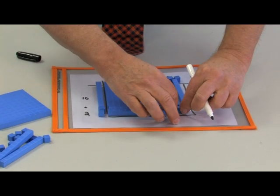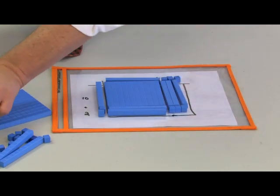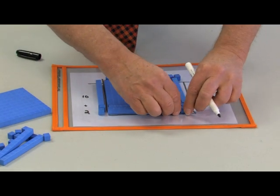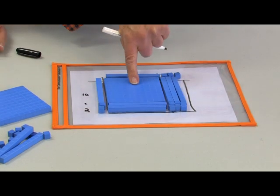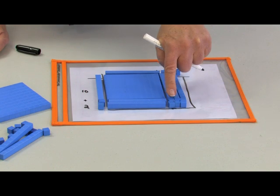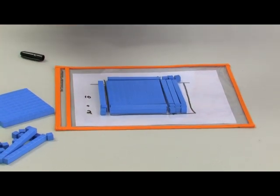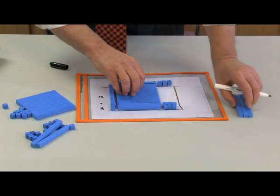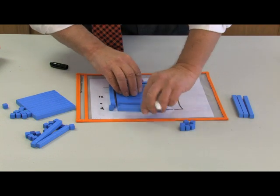And then the array over here is 2 by 3, so that is going to be filled in with 6 cubes. Now what's the answer? Well the answer must be 100, 10, 20, 30, 40, 50, 1, 2, 3, 4, 5, 6 - 156. Let's just check that one more time.